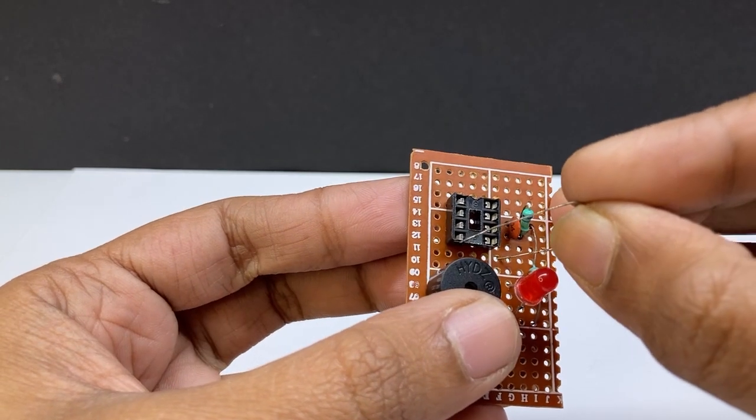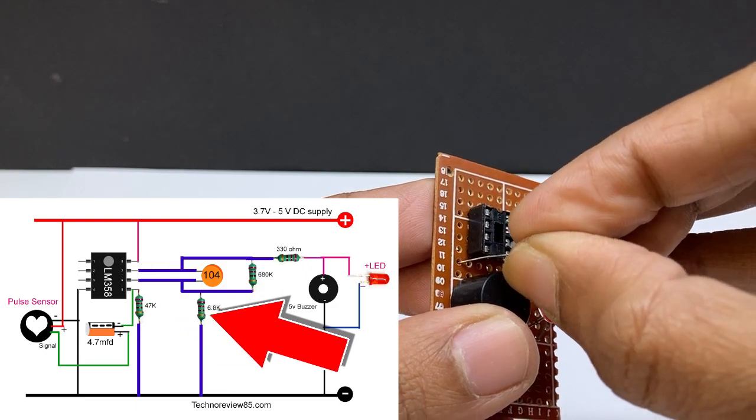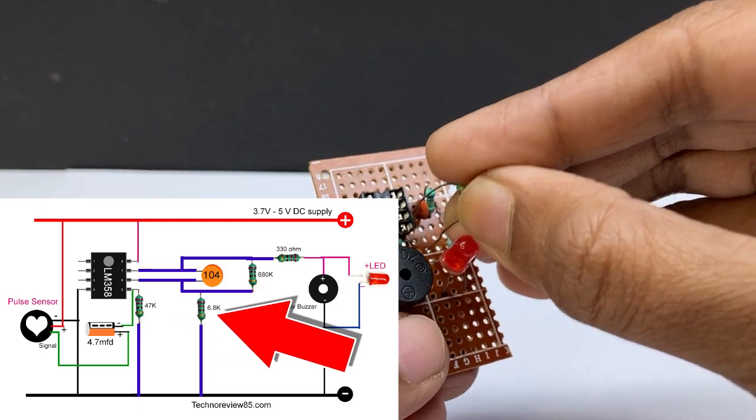Connect 47kΩ resistor to IC pin 4 and 5, and 6.8kΩ resistor to IC pin 6 and 4.